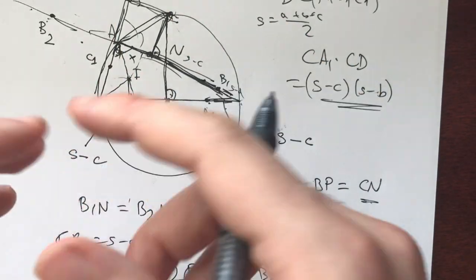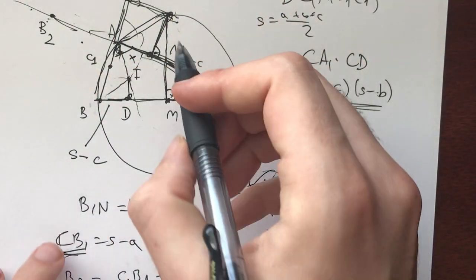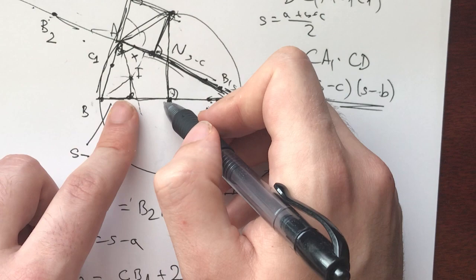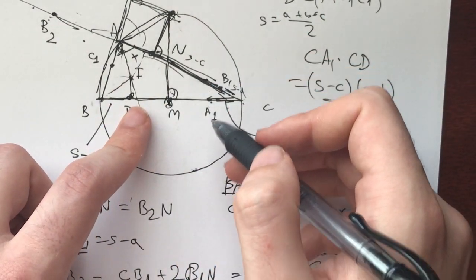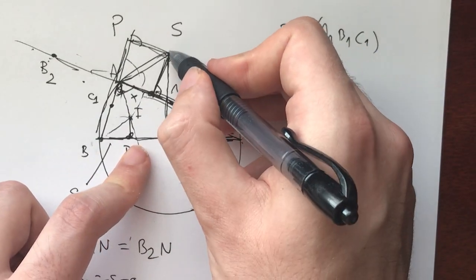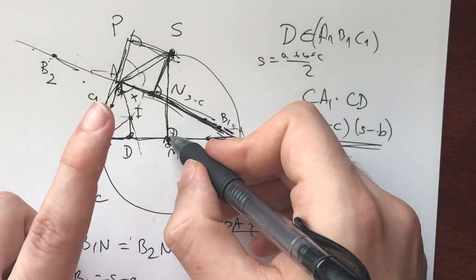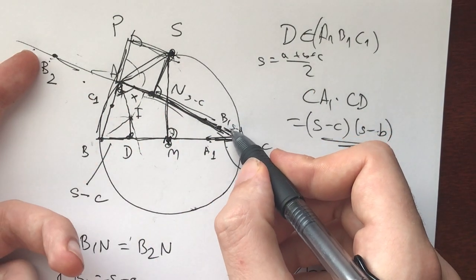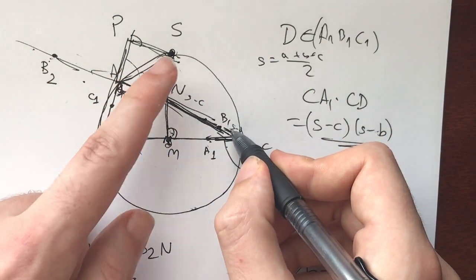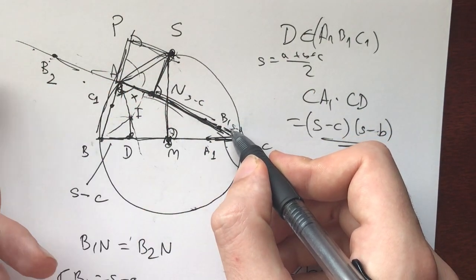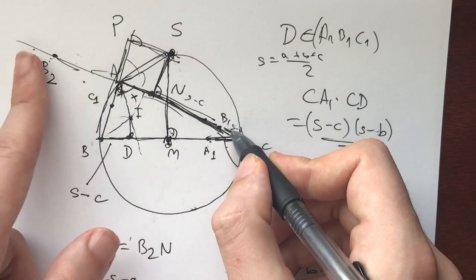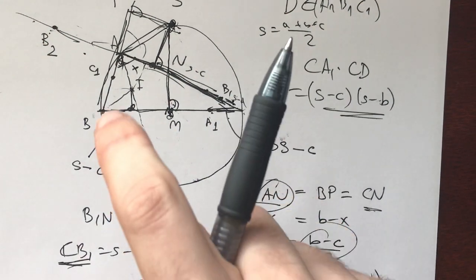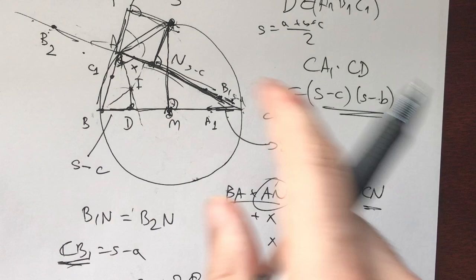This is one beautiful way of thinking about the problem. Once you see that S is a useful point and you find D, you realize you can get another interesting point via power of a point, and that solves everything.